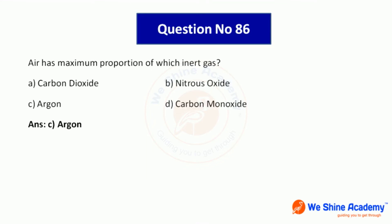Question number 86: Air has maximum proportion of which inert gas? Options include carbon dioxide, nitrous oxide, carbon monoxide. Among inert or noble gases, argon is present in the maximum proportion in air. Answer option C, argon.